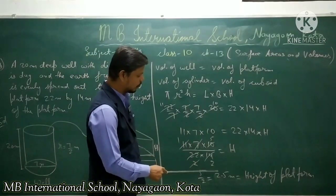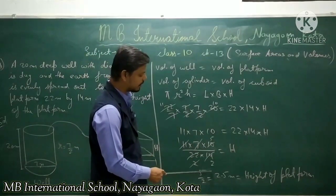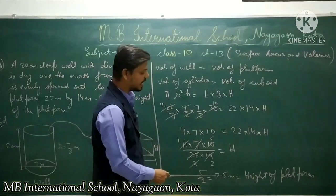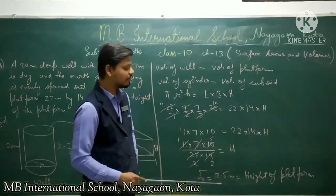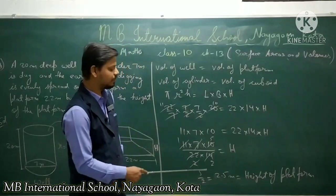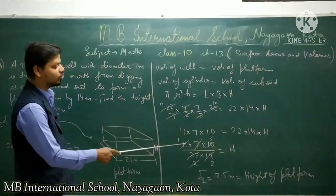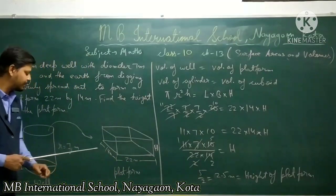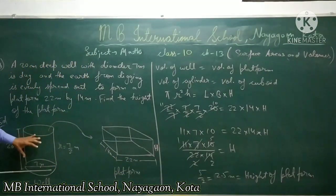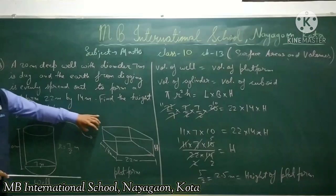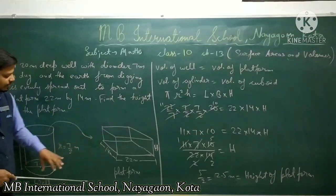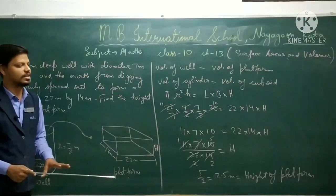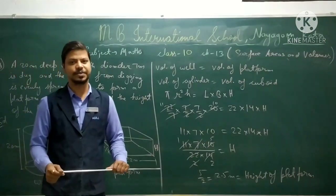The result is 5 upon 2, which equals 2.5 meter. So the height of the platform is 2.5 meter. I hope you understand this video. Thank you.